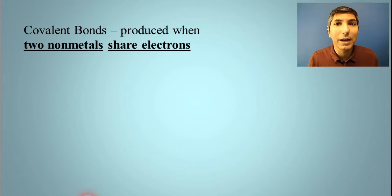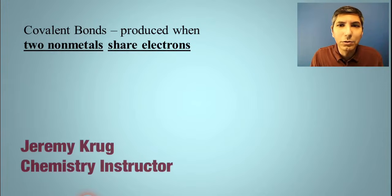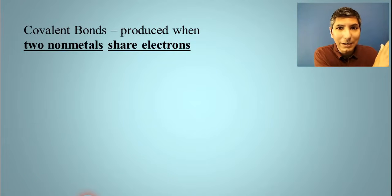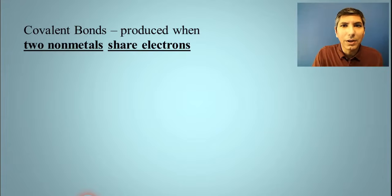We start unit 2 by looking at types of chemical bonds. Now the first type of bond I have up here is called a covalent bond. And this is what you have, generally speaking, when two nonmetals, that is, two elements generally speaking from the right side of the periodic table, are sharing electrons.